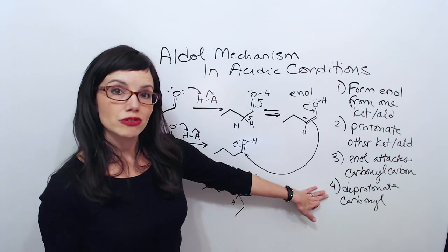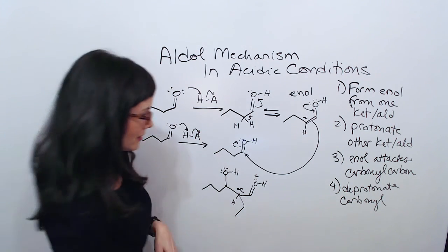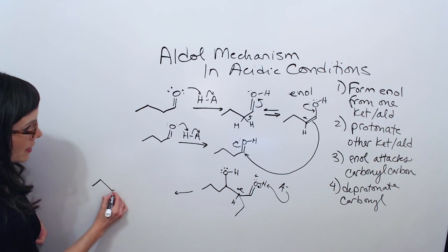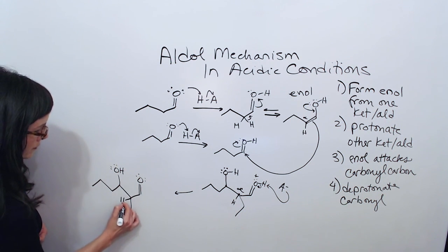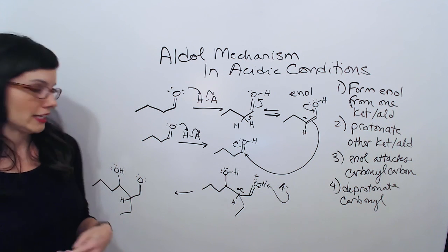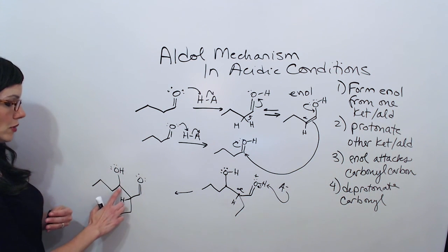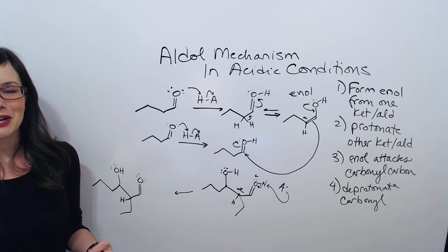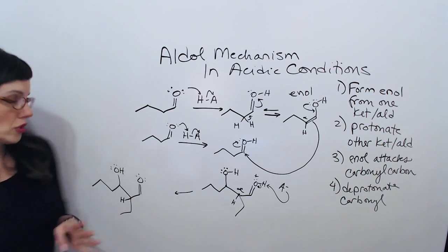Our last step to make it into a true, complete aldol product is to just deprotonate this carbonyl. All we need for that is the anion from our acid. It's just going to come grab this proton, push these electrons back into our O, and you'll see our final product. This final product is what's called a beta-hydroxy ketone or aldehyde — in this case, we have an aldehyde. This is the alpha carbon, this is the beta carbon, so we can say there's a hydroxy group on the beta.